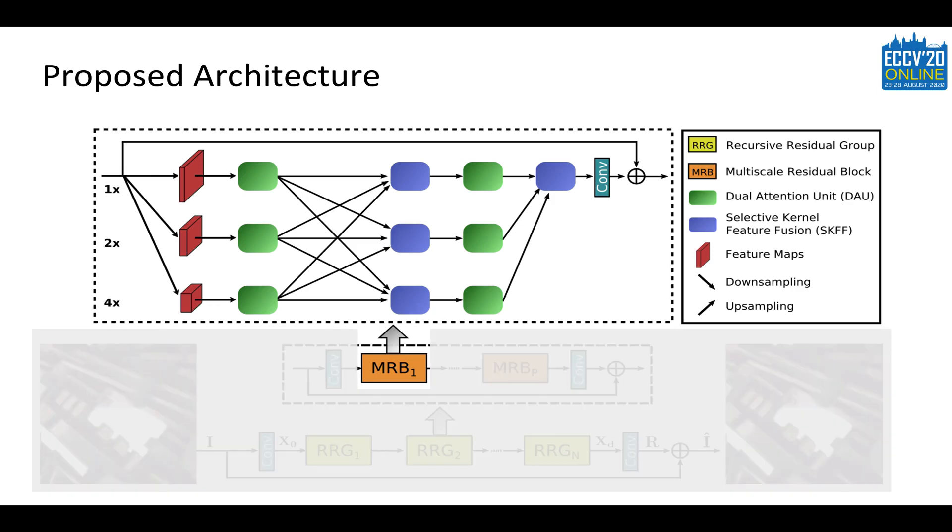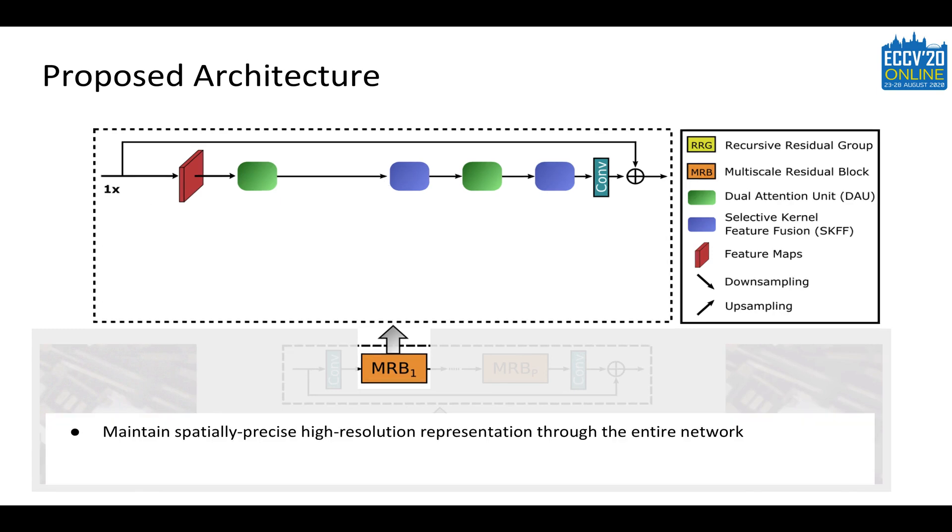In the core of the network is the multiscale residual block that contains several key elements. First, the main branch is dedicated to preserve the spatial resolution of features through the entire network. It allows us to retain precise spatial details.